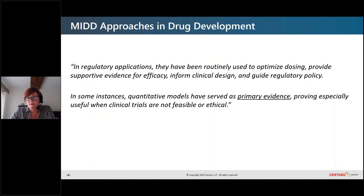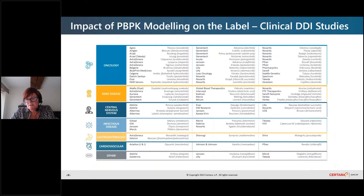What we're seeing more of is an increasing number of occasions when quantitative models have served as primary evidence, proving especially useful when clinical trials are not feasible or ethical. There's been an increasing impact of PBPK modeling on the label, especially when we're talking about clinical DDI studies. These instances of PBPK modeling being used to support the label and regulatory submissions are increasing every month.